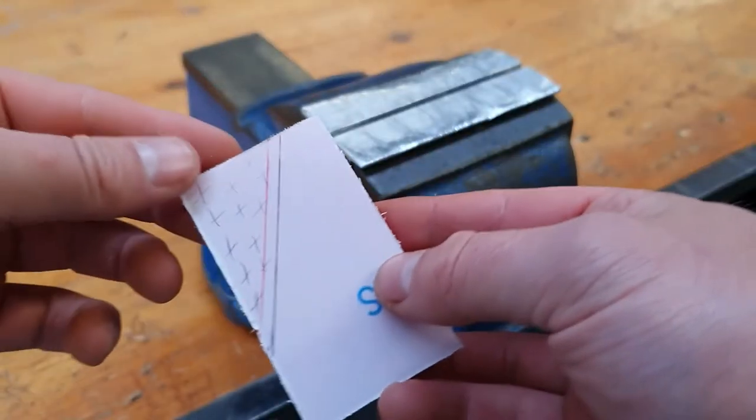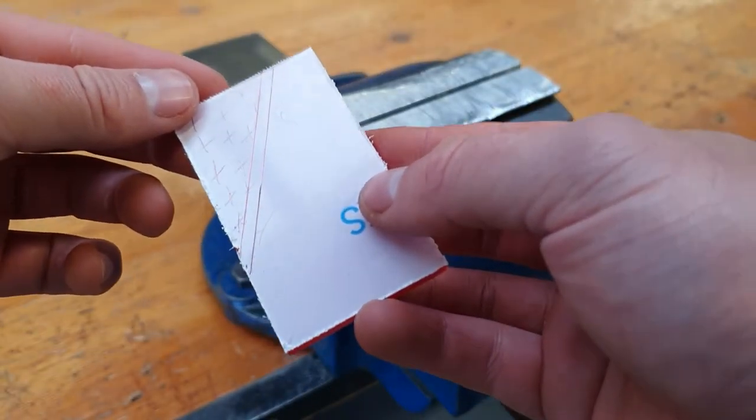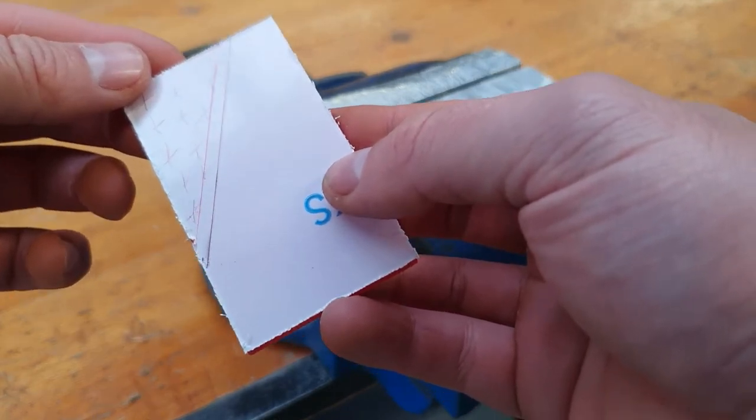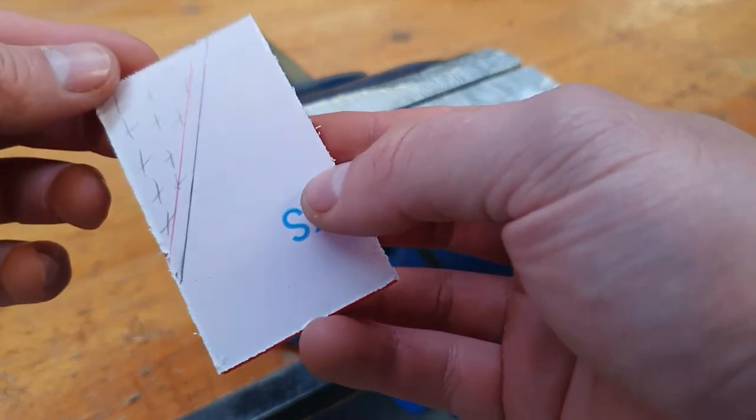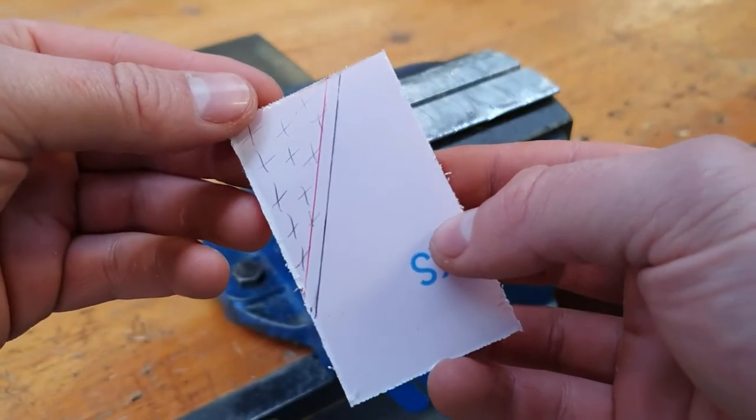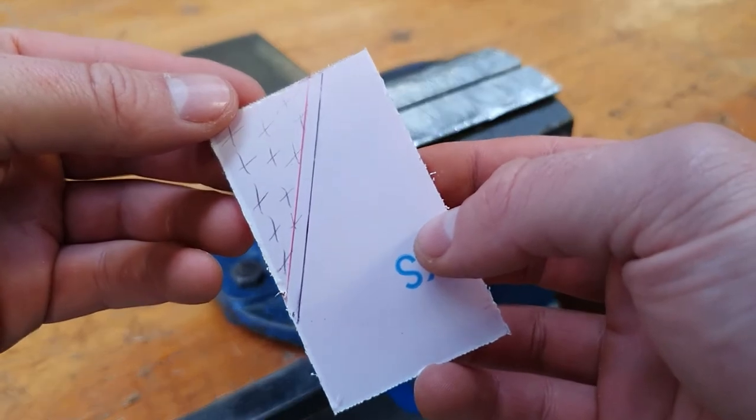When hacksawing, we always draw a second line a couple of millimeters away from our actual line, just to make sure that we do not cut into our workpiece and also to allow for filing. If you see here, my black line is my actual line, but the red line is the line that I'm going to hacksaw on.